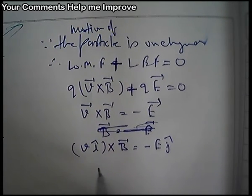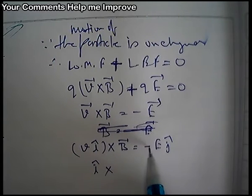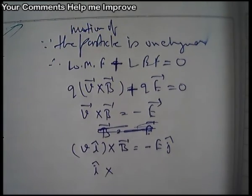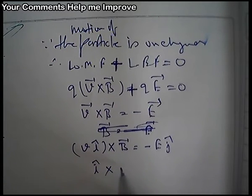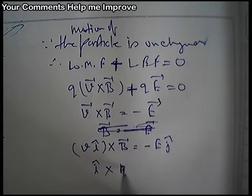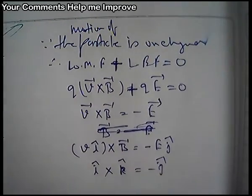Now let's think. What will cross with i-cap to give minus j-cap? This will be actually since i-cap cross k-cap equals minus j-cap.